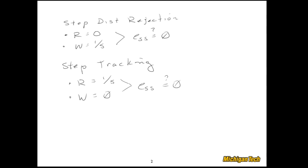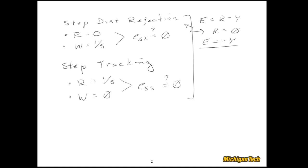The disturbance rejection analysis is a bit simpler than the step tracking analysis. In both cases, E is equal to R minus Y. A common mistake is to use E equal to W minus Y for disturbance rejection, but it's always the reference minus the output. For the disturbance rejection case, R equals 0, so E is just equal to negative Y, which is why that analysis is typically a little bit easier.